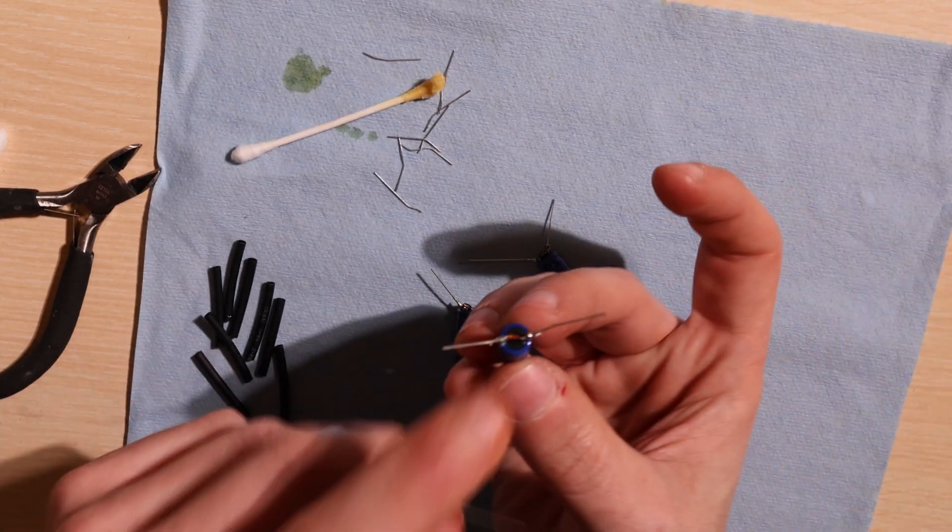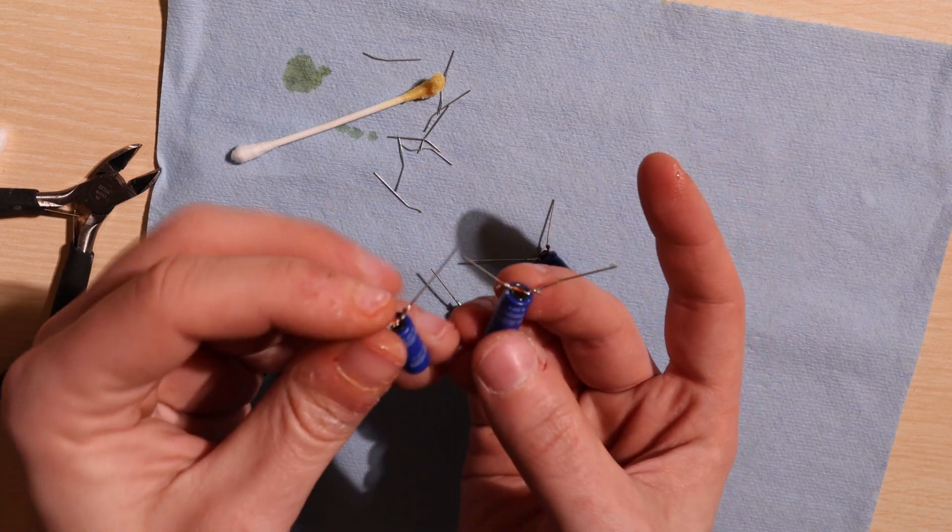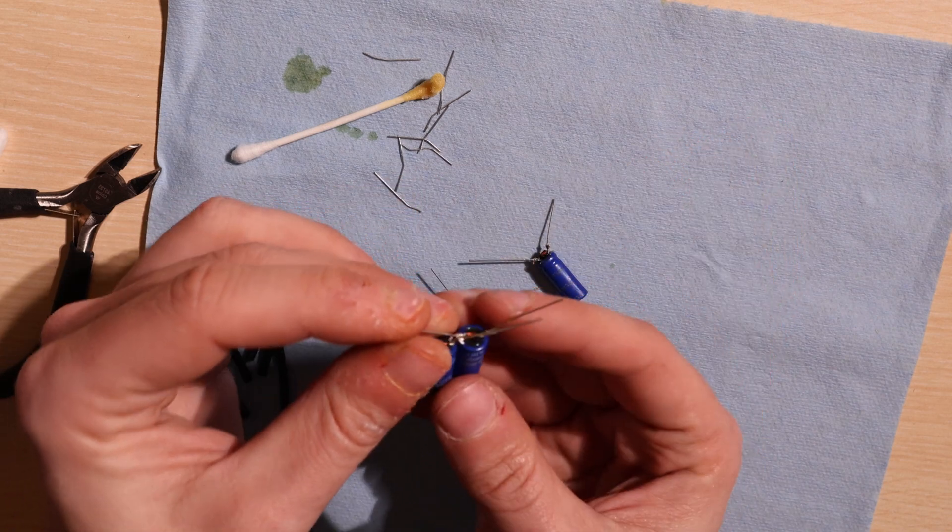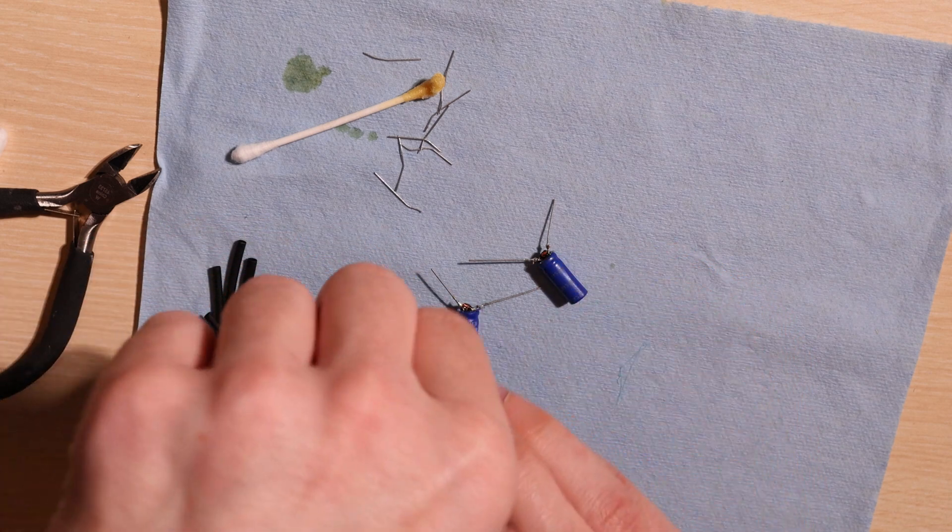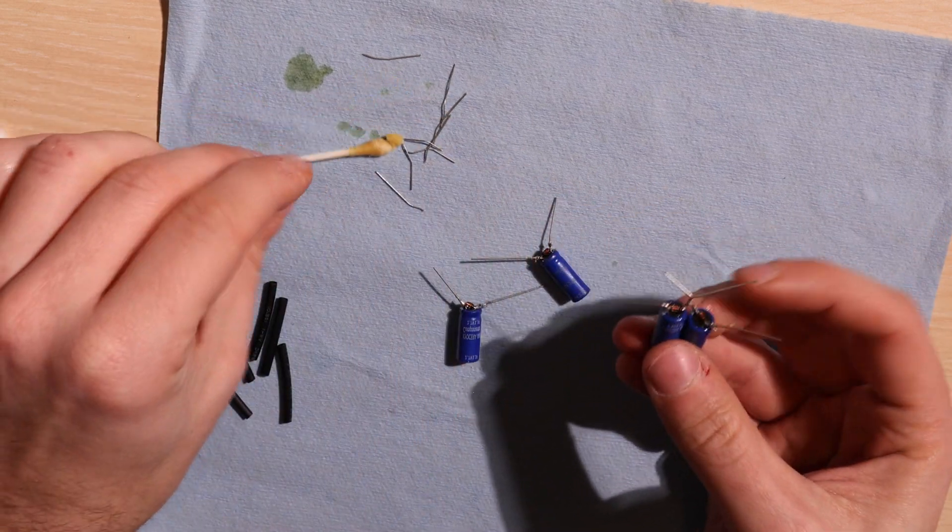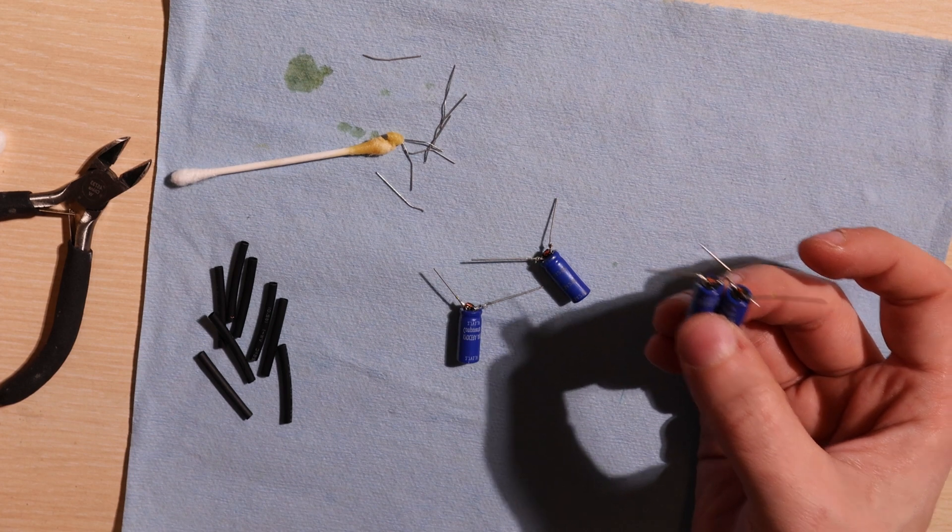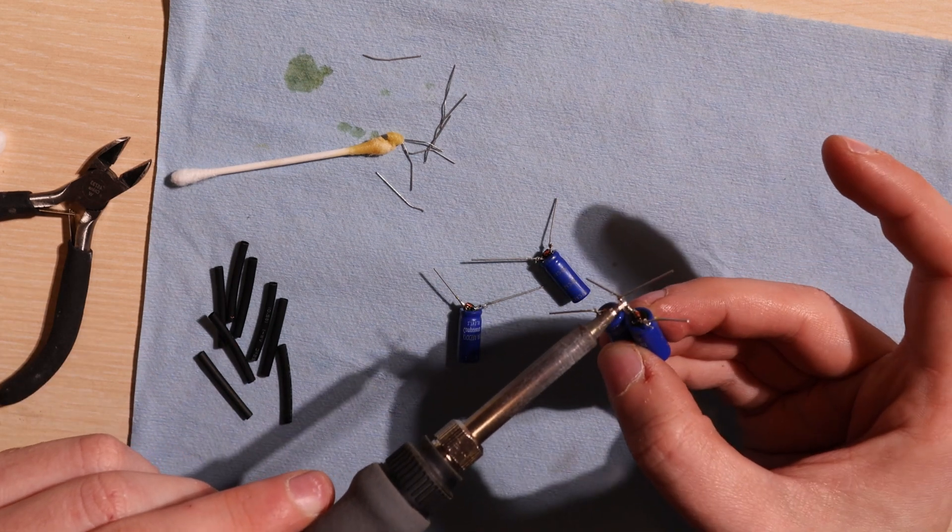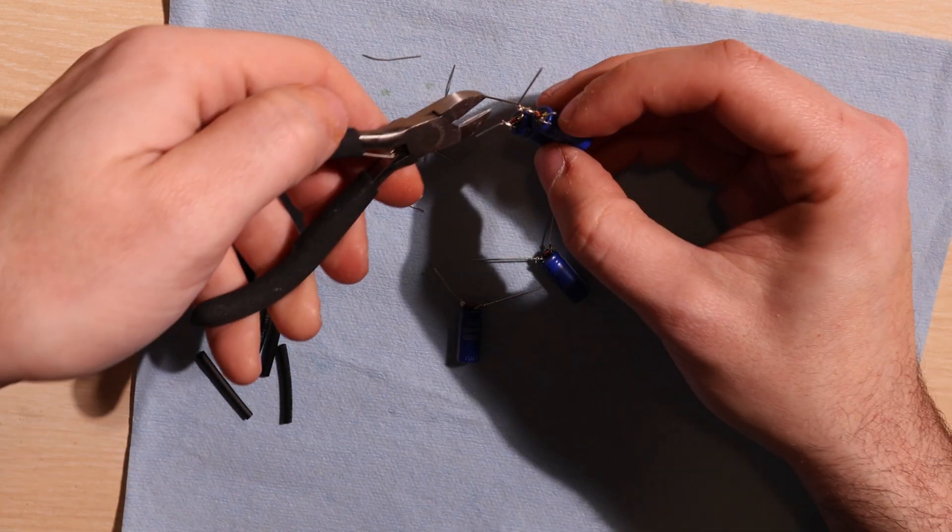Now we'll take each capacitor and join them so that the positive side of one capacitor is twisted to the negative side of the other capacitor. We'll then add some flux and solder the pins together. And then we'll trim the excess off of the pins.